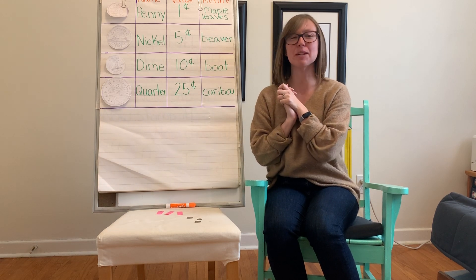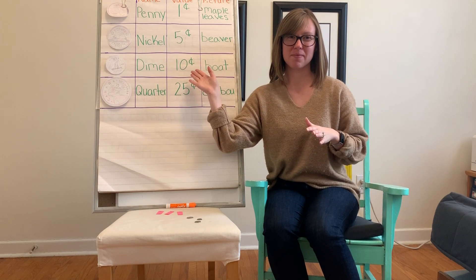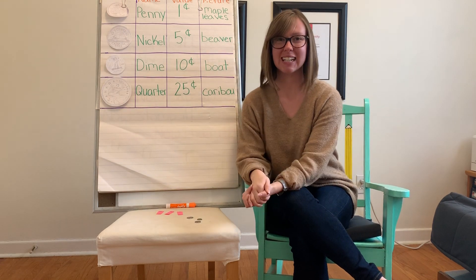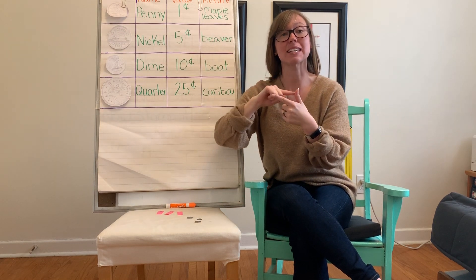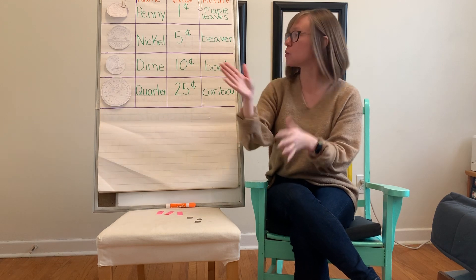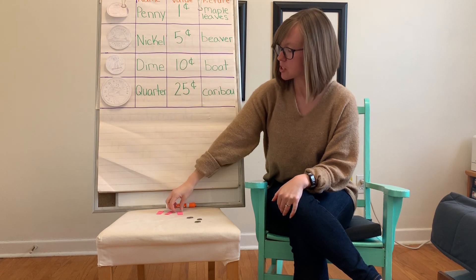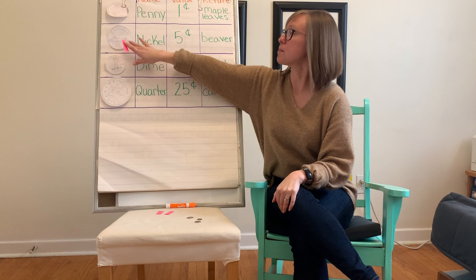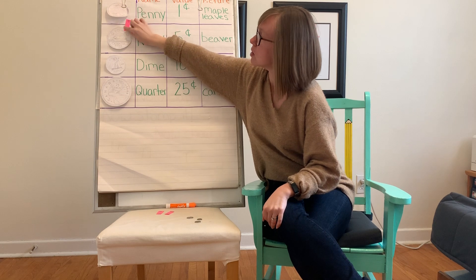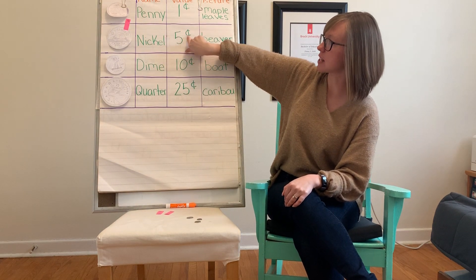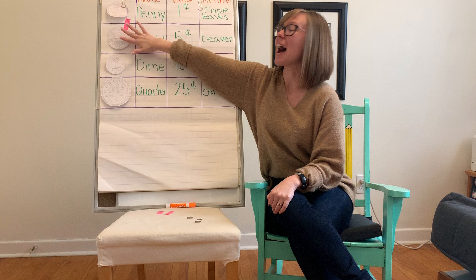So today we're going to learn the hairy money strategy even though you guys know how to skip count by tens. Our hairy money strategy means we add a hair to the coin for how many times we need to skip count by fives to equal its value. For example, with the nickel — we only have to skip count one time to reach five cents — so the nickel has one hair.